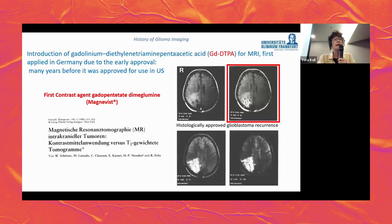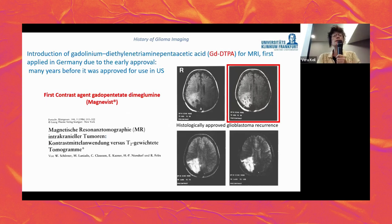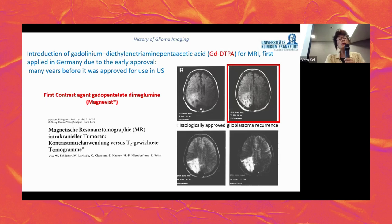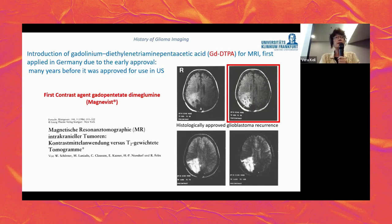Gadolinium-based contrast agents were introduced into medical diagnosis, first in Germany where there were fewer regulatory restrictions compared to the USA. These authors early on recognized that gadolinium contrast could separate vital brain tumor tissue from necrosis and from edema.